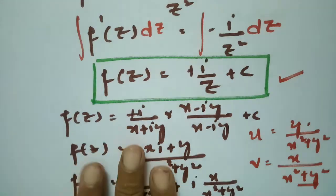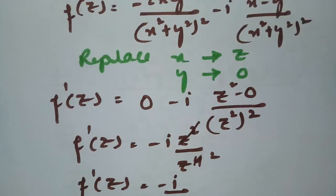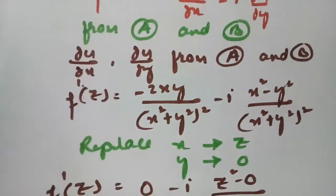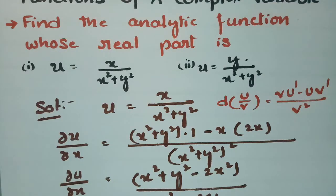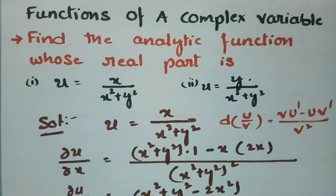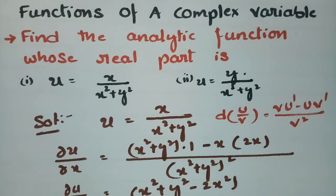This is how we solve these problems — it is quite straightforward if you follow each step. When u (the real part) is given, we can find the imaginary part and the full analytic function using the Milne-Thomson method. If you like this video, share it with your friends, subscribe to the channel, and give it a thumbs up. Thank you!